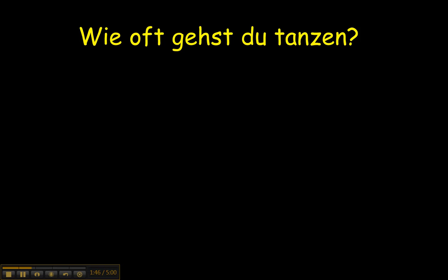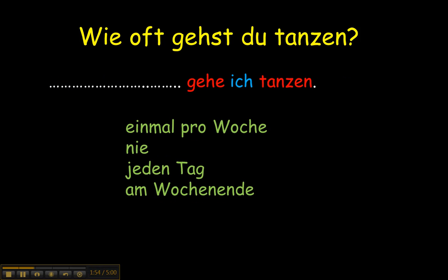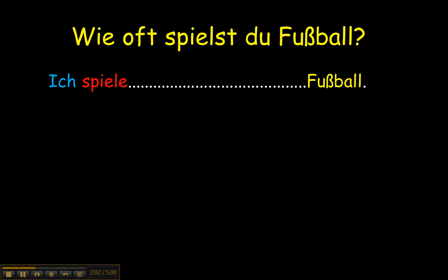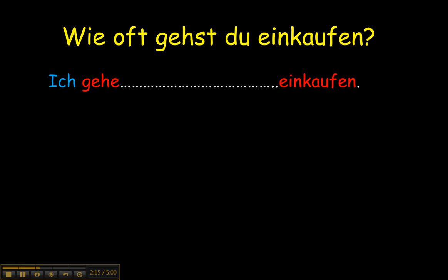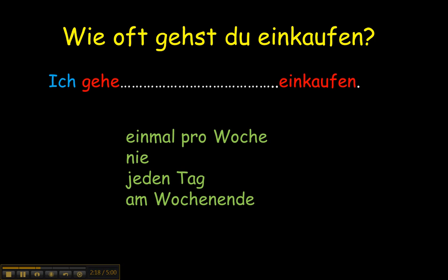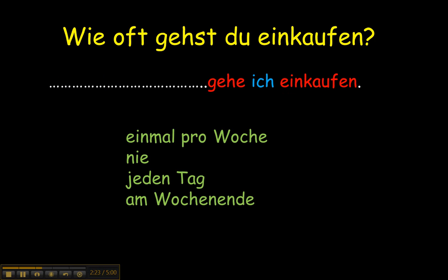We'll look at some examples. "Wie oft gehst du tanzen?" — How often do you go dancing? "Ich gehe am Wochenende tanzen." Or we could switch it around and say, "Am Wochenende gehe ich tanzen." "Wie oft spielst du Fußball?" — How often do you play soccer? "Ich spiele jeden Tag Fußball." Or, "Jeden Tag spiele ich Fußball." You could even switch it around more and say, "Fußball spiele ich jeden Tag." "Wie oft gehst du einkaufen?" — How often do you go shopping? "Ich gehe einmal pro Woche einkaufen." Oder, "Einmal pro Woche gehe ich einkaufen."